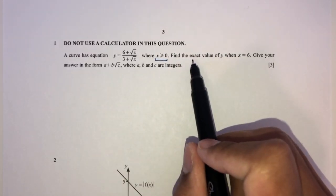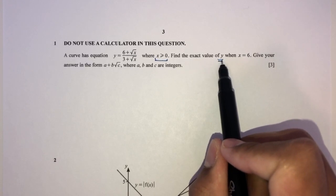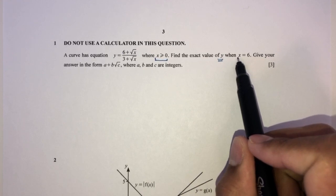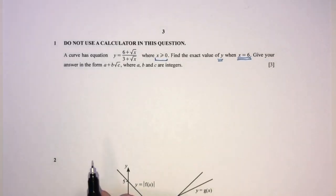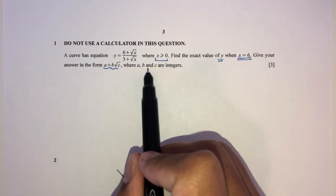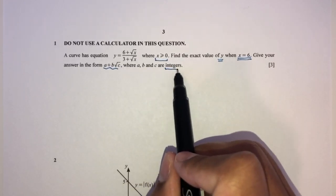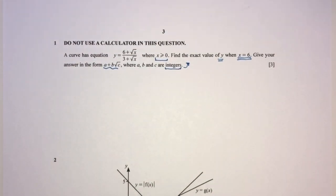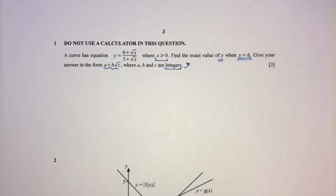We have to find the exact value of y — remember, this is the goal of the question — when x is equal to 6. Give your answer in this form where a, b, and c are integers, meaning whole numbers. So if you simplify and get a decimal answer, you know it's not right, because the answer tells you they must be integers. That's an indication to yourself so you don't make any silly mistakes.